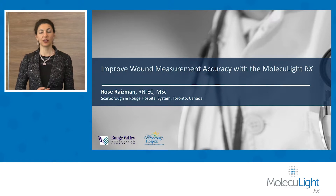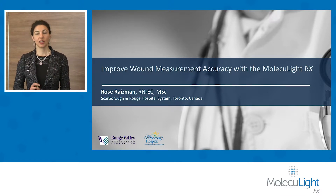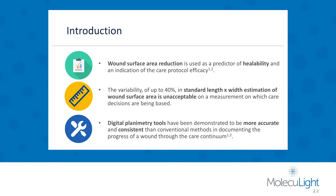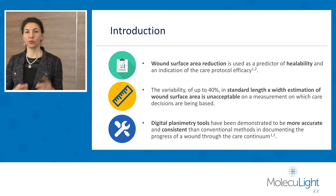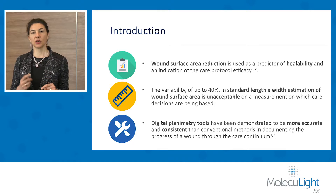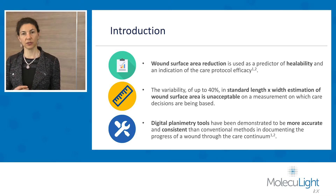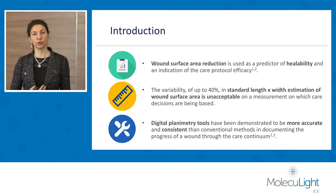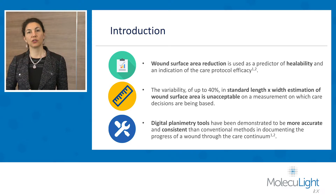In this lecture I would like to tell you about how I use Moleculight to measure my wounds and track how they heal. Wound surface area reduction is used to predict healability and as an indicator of care protocol efficacy. We usually measure the wound from the longest diameter perpendicular to the width, though some places use head-to-toe direction and then perpendicular direction. Using this method can overestimate or underestimate 40% of the real wound measurements, making it not the best option to base clinical decisions on.